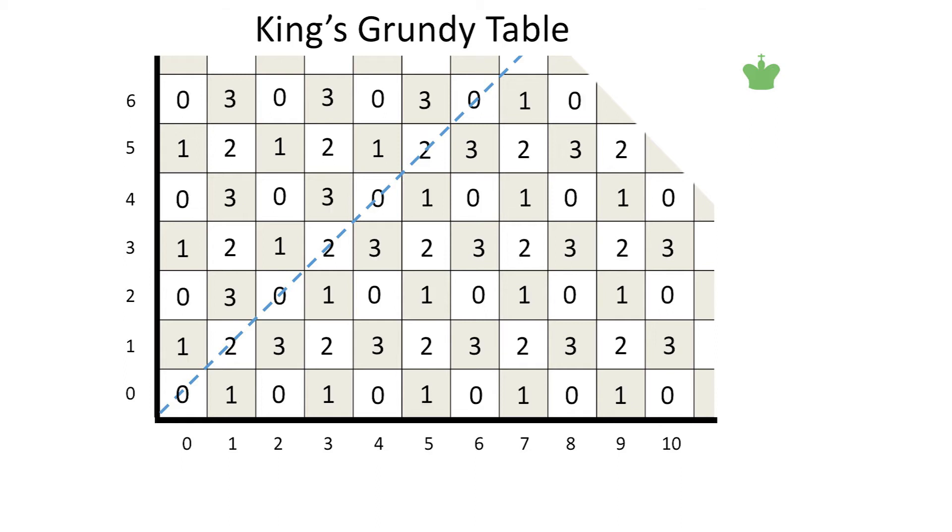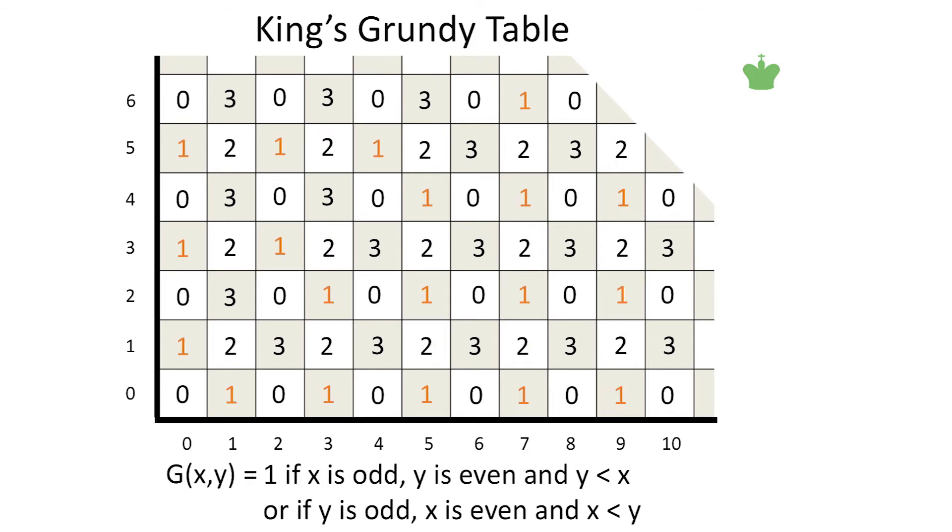So here is the overall Grundy table of the king. Where are the zeros? They occur when our row and column indices are both even. Where are the 2s? They occur when the row and column indices are both odd. Where are the 1s? They occur when the bigger index is odd and the smaller index is even.